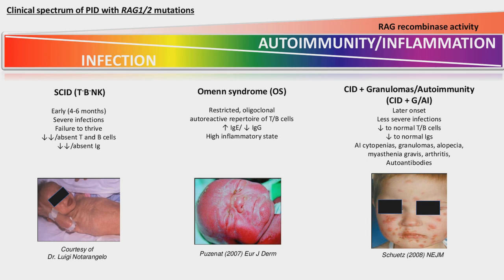During our presentation, we'll be discussing disease states where there are defects in recombination activating gene. Normally, both alleles have to be mutated to cause disease. However, one of our patients has low levels of RAG recombinase activity with a compound heterozygous mutation. RAG deficiency was initially linked to severe combined immunodeficiency, or SCID, where the T and B cell repertoire is absent and severe infections and failure to thrive occur. Later, RAG deficiency was associated with a spectrum of immune diseases ranging from infection to autoimmunity and inflammation, with more autoimmune phenotypes showing preserved RAG recombinase activity.